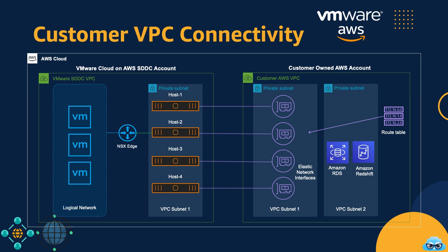As we wrap up this module on networking considerations, we've explored the intricate network architecture that underpins VMware Cloud on AWS. From overlay and underlay networks to Tier 0 and Tier 1 gateways, we've laid the foundation for a robust, secure, and high-performing network environment. In the next module, we will delve into migration options, exploring how you can seamlessly transition your workloads and data into VMware Cloud on AWS.